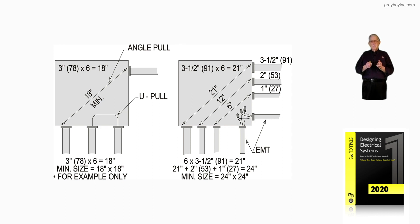This illustration is showing an angle or U-pull type configuration of the conductors and sizing the box to enclose them and allow the bends without damaging the insulation. And that's what this figure is illustrating.